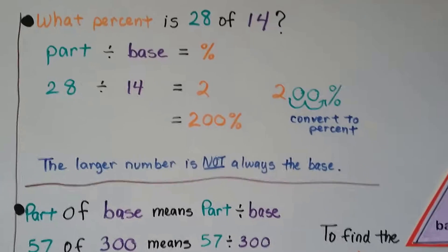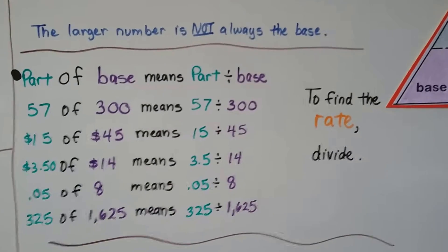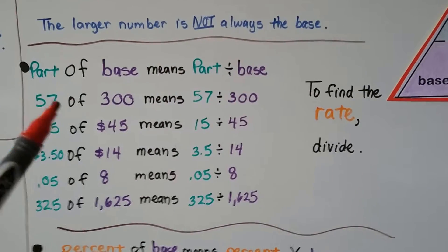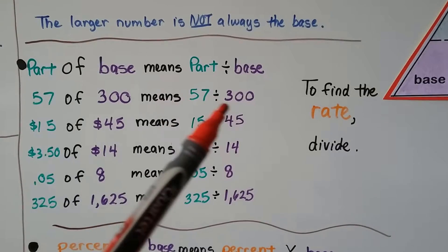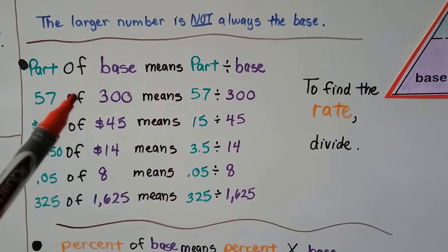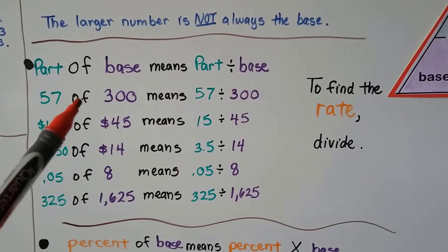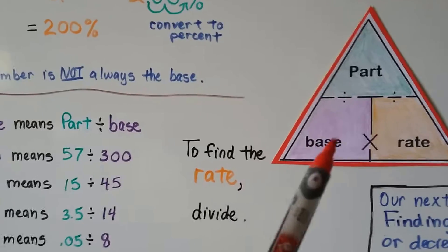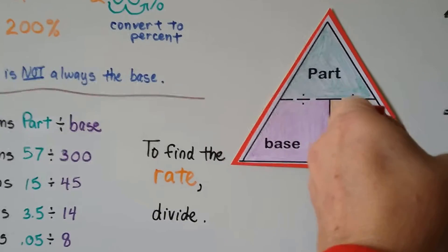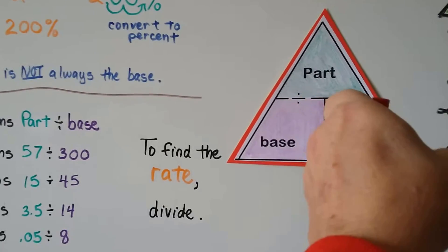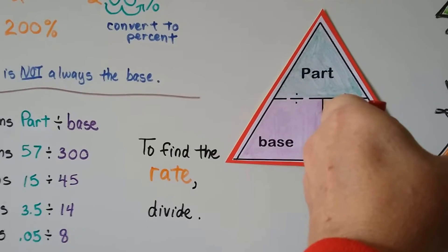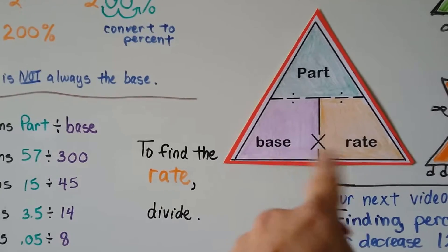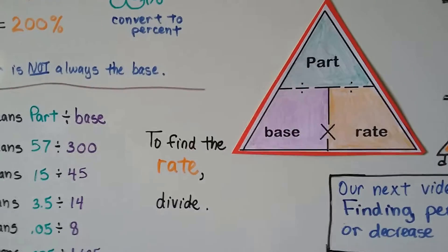So here's the wording: if it says "part of the base," it means part divided by base. So "57 of 300" means 57 divided by 300. Think of the word "of" — when you're finding the rate, think of the word "of" as division. When you look at our triangle and we're trying to find the rate, we cover rate, so that means there's division there. Think of the multiplication sign as "of" when finding the part, and I'll show you that in a second.